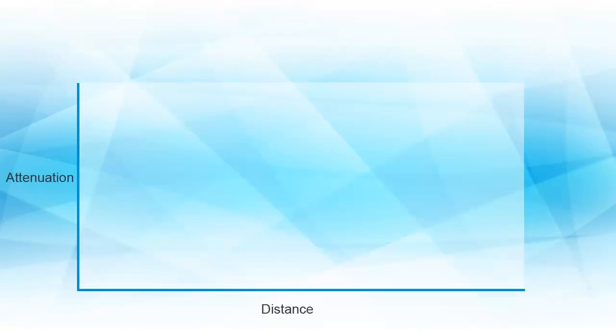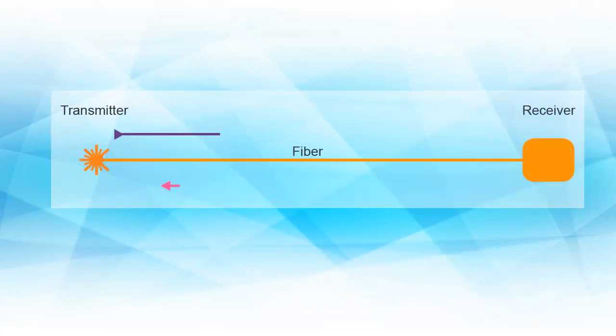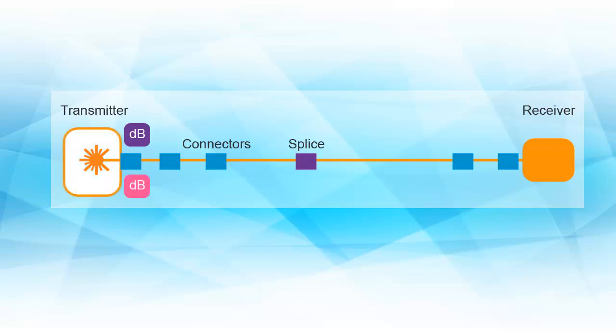Optical return loss, ORL, represents the total accumulated light power reflected back to the source from the complete optical span, which includes the backscattering light from the fiber itself, as well as the reflected light from all of the connections and terminations. ORL expressed in decibels dB is defined as the logarithmic ratio of the incident power to the reflected power at the fiber origin.